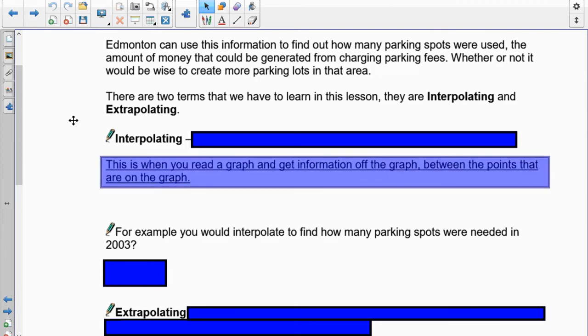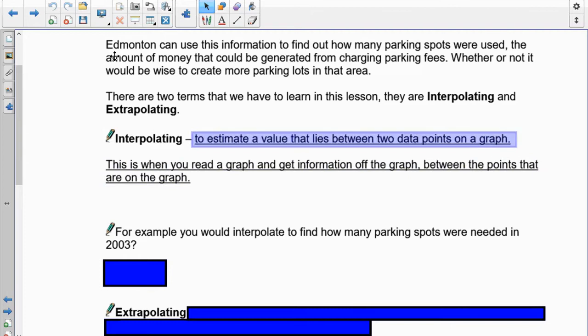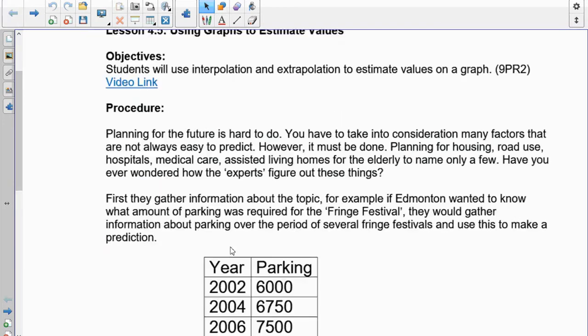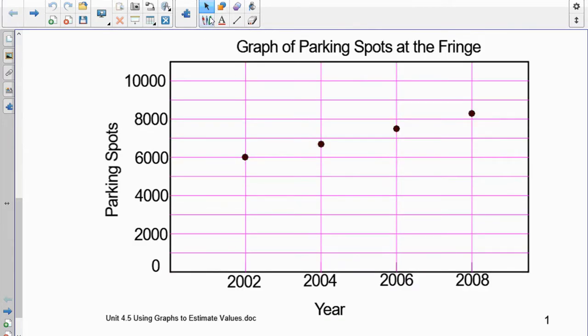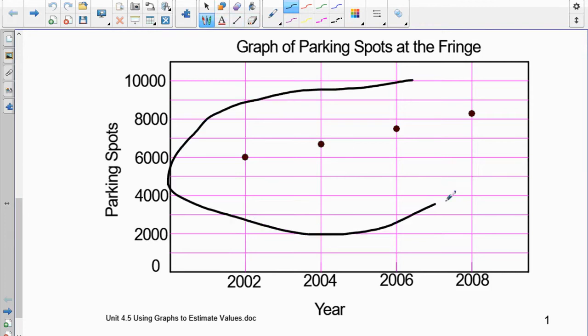Interpolating is defined as estimating a value that lies between data points on the graph. So to go back to our graph right here, interpolation means that what we're going to do is we're going to work with this stuff right here. Whatever's on the graph,